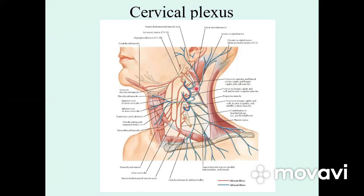The lesser occipital nerve, nervus occipitalis minor, runs to the skin of the lateral part of the occipital region. The greater auricular nerve, nervus auricularis magnus, is the largest cutaneous branch of the cervical plexus and supplies the concha of the auricle and the external acoustic meatus.